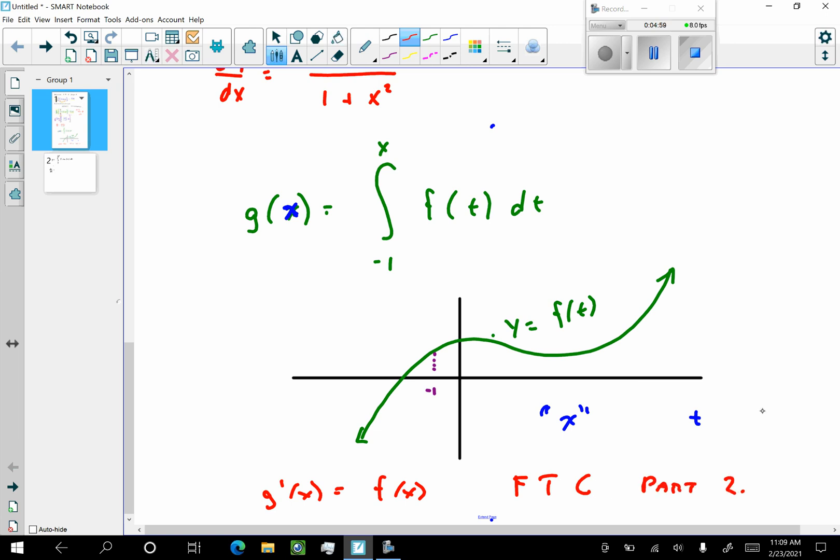And so these types of problems come up a lot on free response questions. And then you can evaluate. Then you can look at g prime. What you're looking at here is y is equal to f(t). But you're really looking at g prime of x is the graph that you're looking at. And then you can say, when is g prime positive? When is g prime negative? When does g prime cross the x-axis? So we'll have some problems similar to that down the road as well.